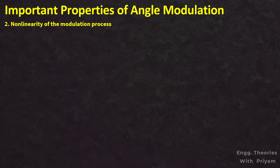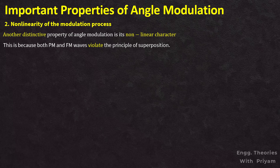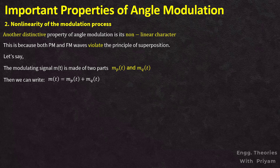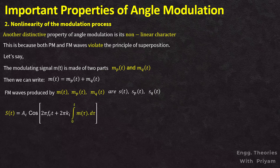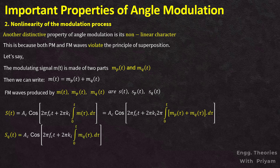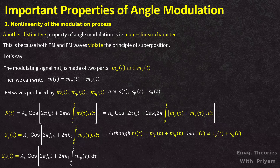The second property is the non-linearity of the modulation process. A distinctive property of angle modulation is its non-linear character, because both FM and PM signals violate the principle of superposition. If modulating signal m(t) is composed of two parts mp(t) and mq(t), so that m(t) = mp(t) + mq(t), then the FM signal s(t) produced by m(t) is not equal to sp(t) + sq(t), even though m(t) = mp(t) + mq(t). Therefore, angle modulation is nonlinear in nature as it violates the principle of superposition.